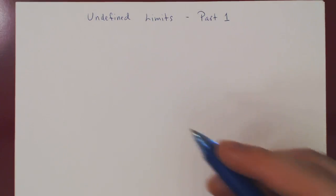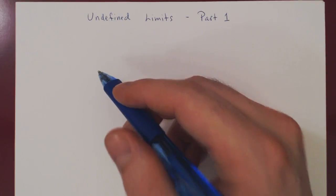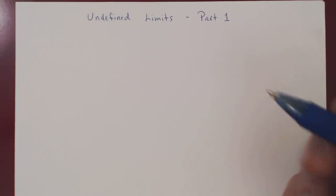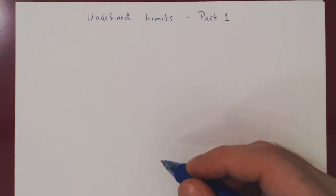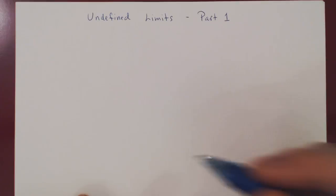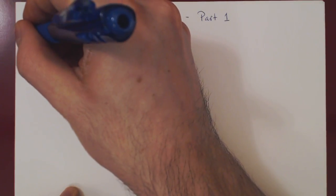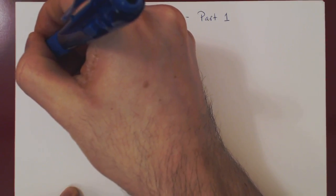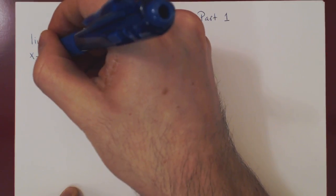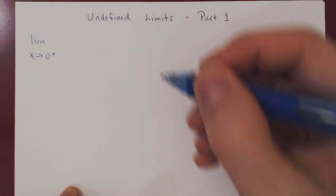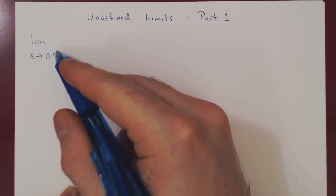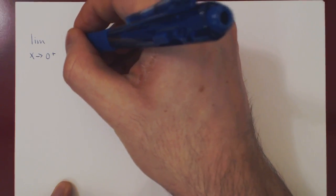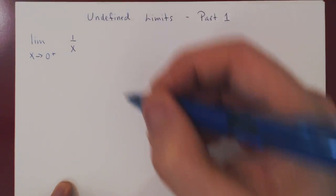In this video, we will consider simple examples of undefined limits. Let's look at the following right-hand limit. We're letting x approach 0 from the right, and we consider 1 over x.